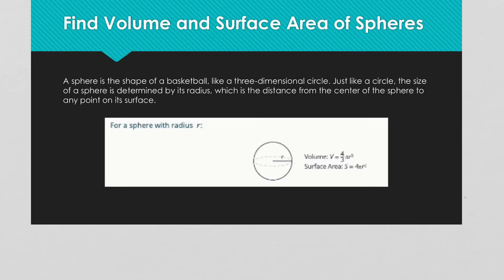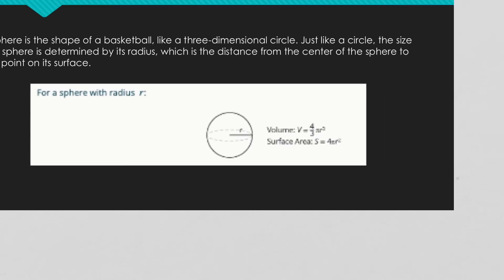Now we're going to find the volume and surface area of a sphere. A sphere is shaped like a ball — a basketball would be a sphere, as would a baseball. Just like a circle, the size of the sphere is determined by the radius, which goes from the outer edge into the dead center of the ball. The volume formula is 4/3 × π × r³, and the surface area is 4 × π × r².